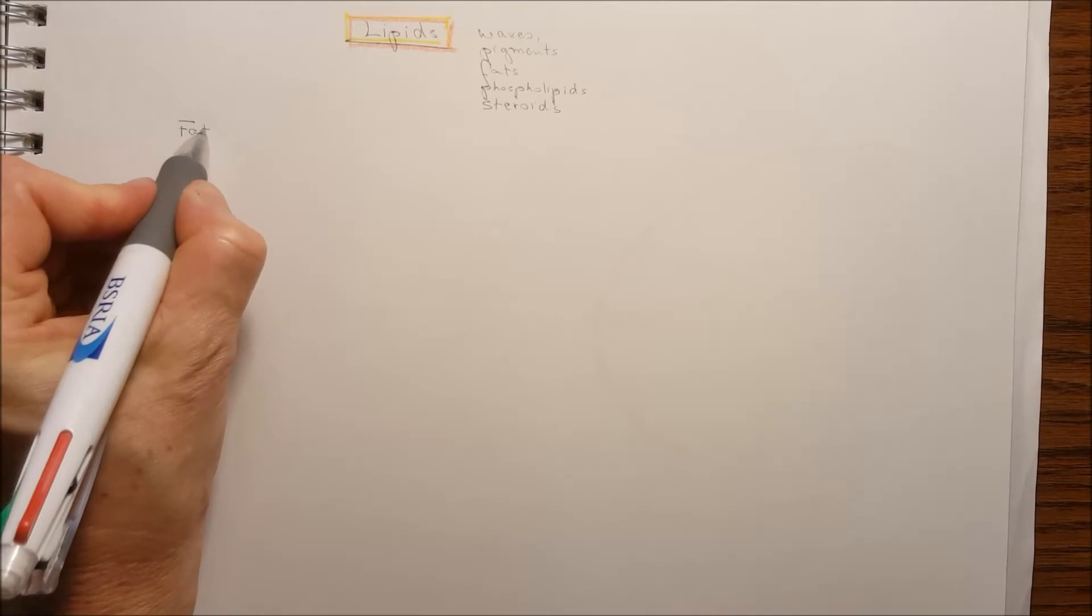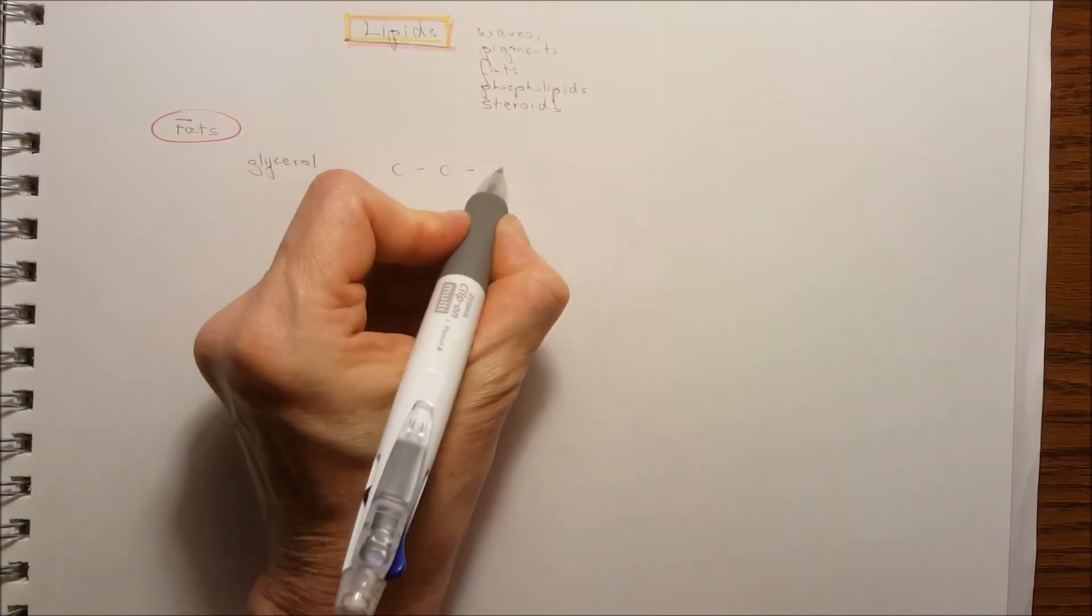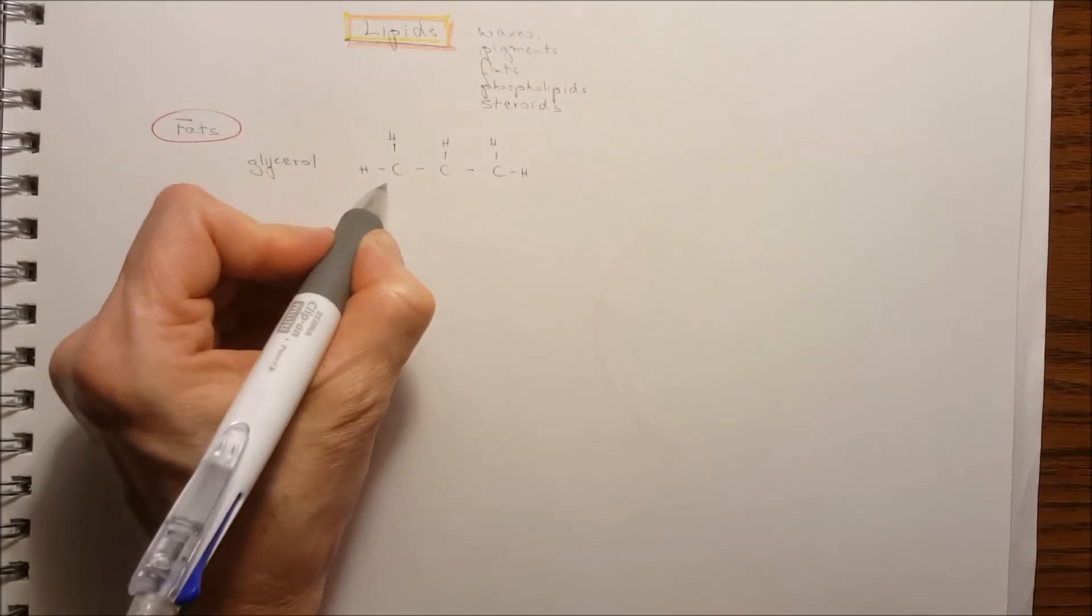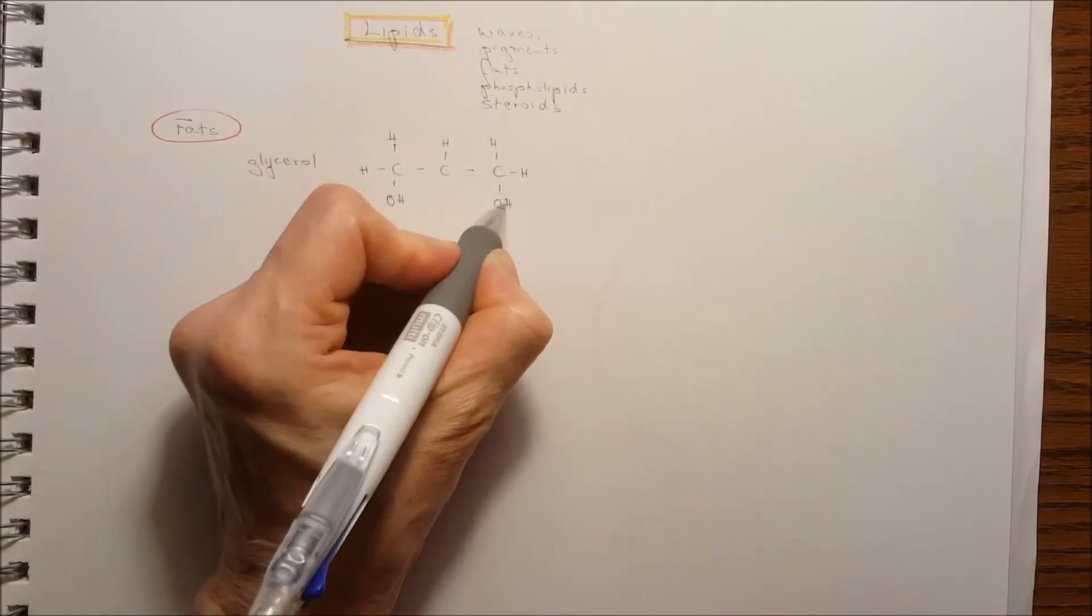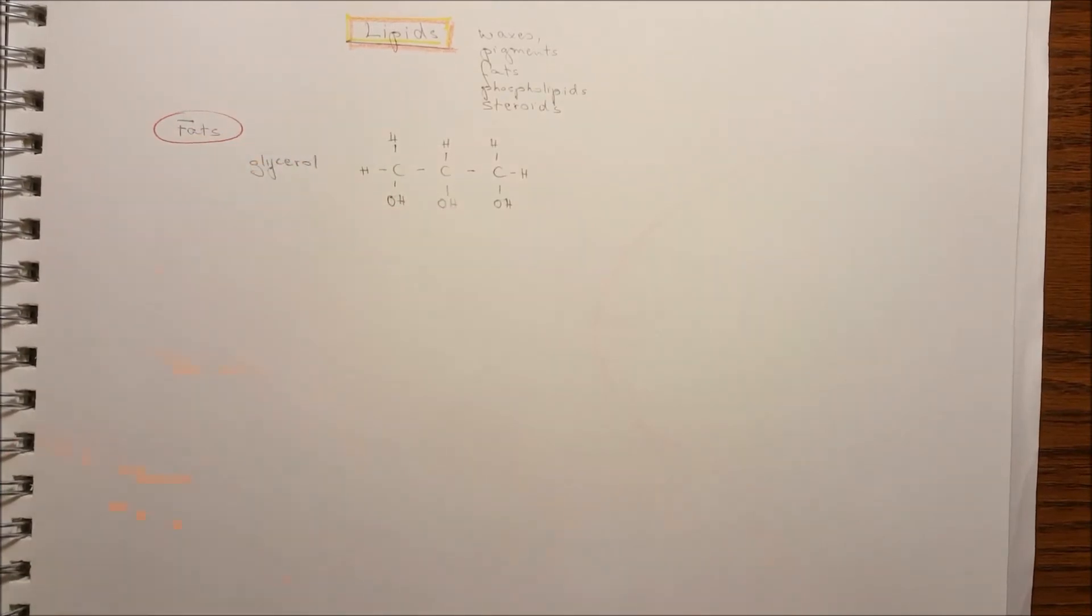Fats are made up of two components. Glycerol and fatty acids. They are not truly polymers because the glycerol is a three carbon alcohol with OH groups, hydroxyl groups. This is how it looks like.